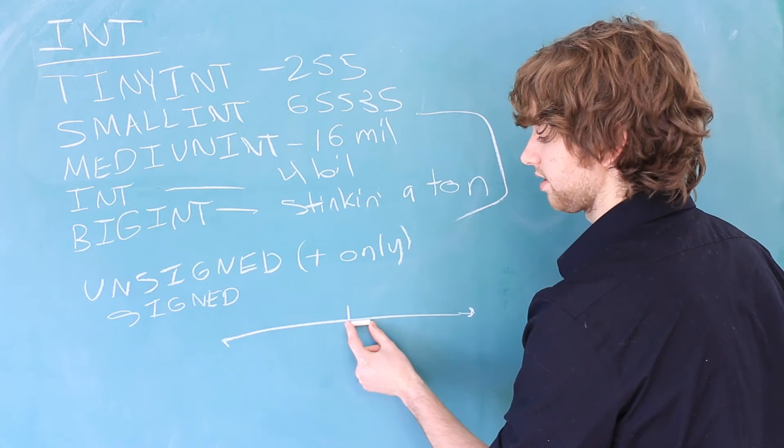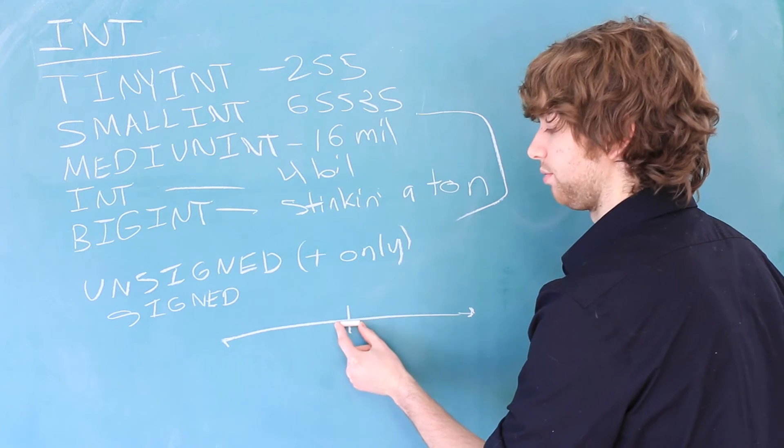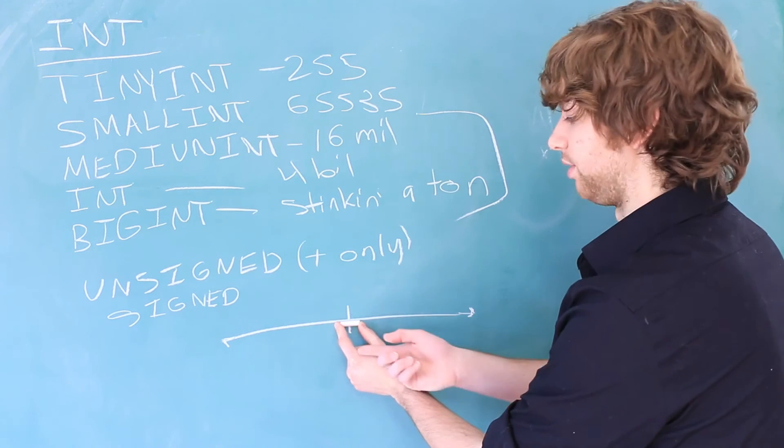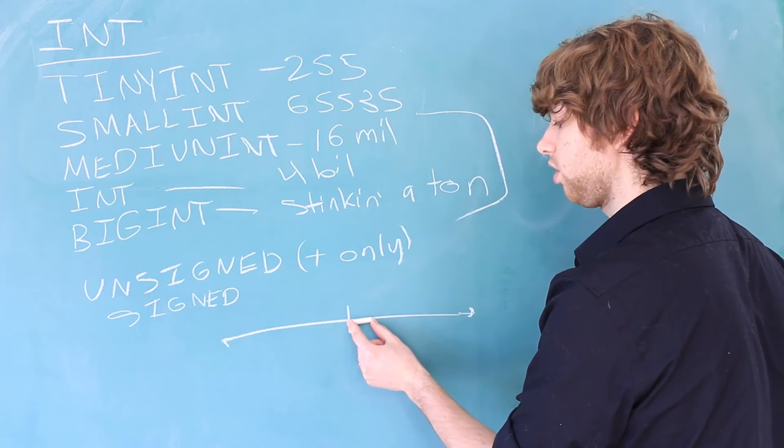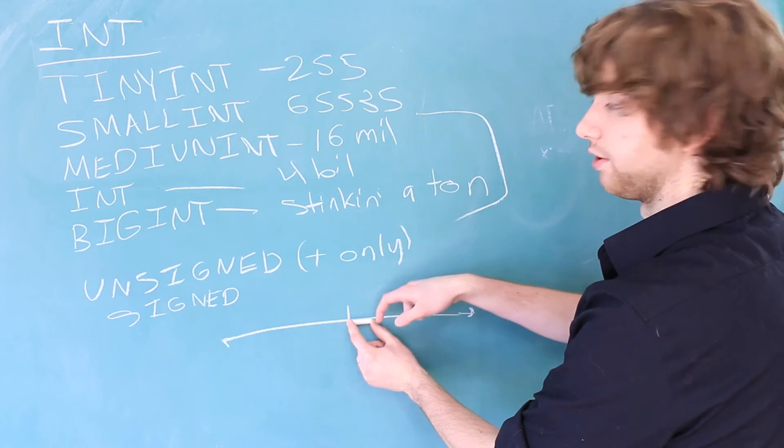If we had a signed integer, half of it would have to go in the negative, and half of it would have to go in the positive. If it's unsigned, we can put all of it in the positive and get a higher number.